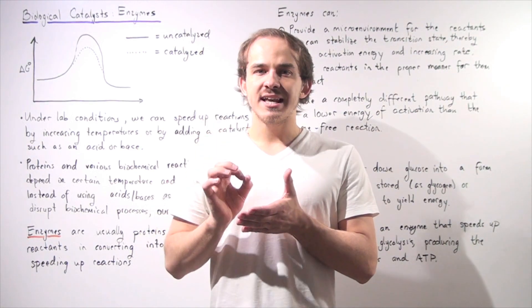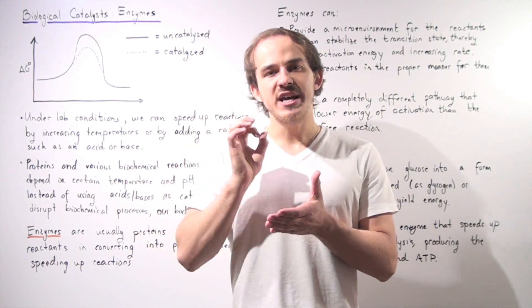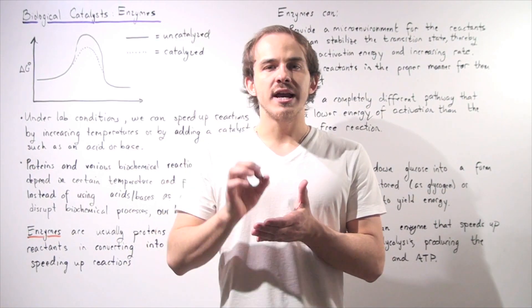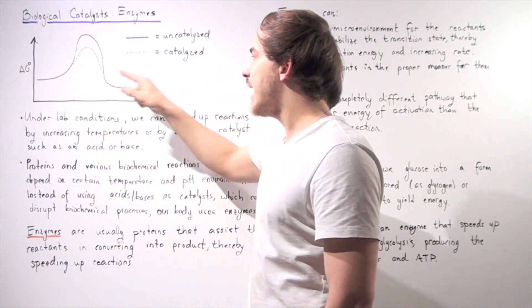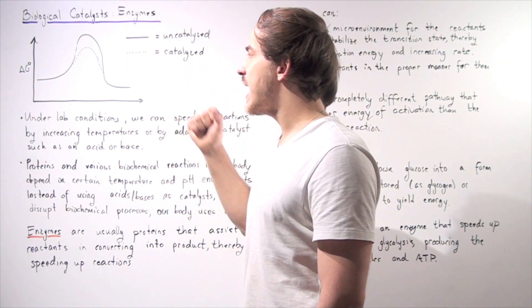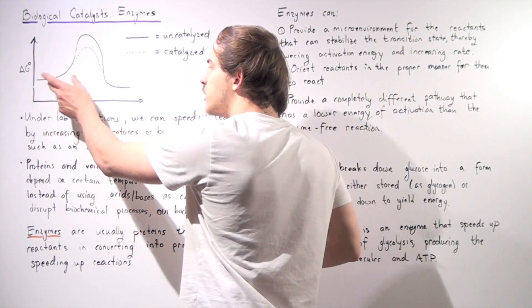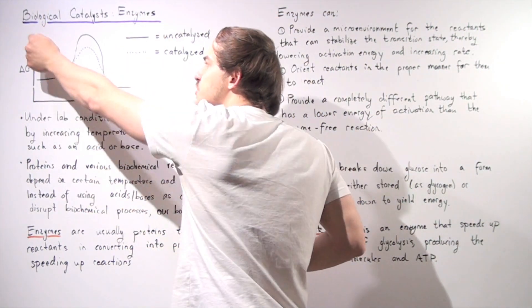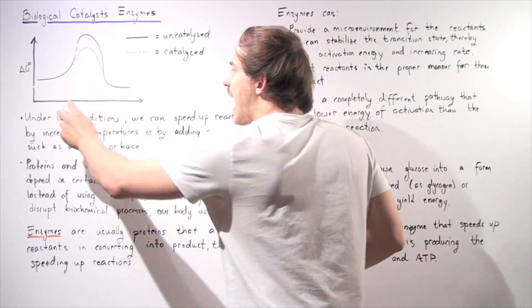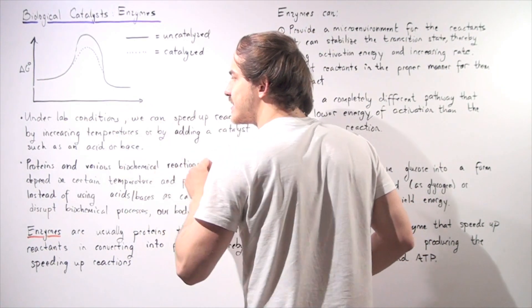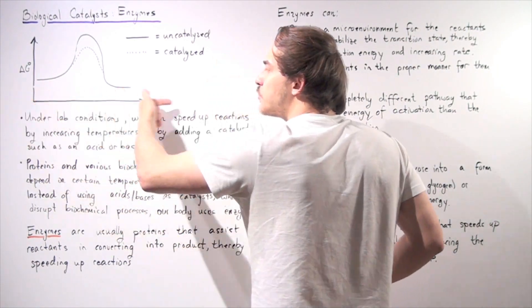Our transition state is the highest energy point of our reaction, it represents the rate of our reaction. Let's suppose we have the following energy diagram for a reaction. So our reactants are converted to our products. This y-axis is the change in Gibbs free energy under standard conditions, and this is our x-axis, it is our reaction progress.